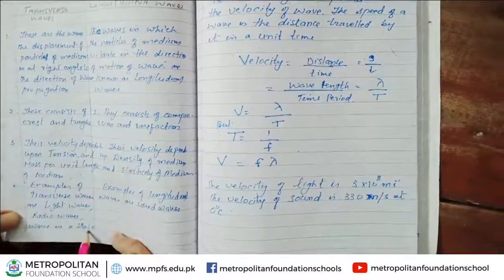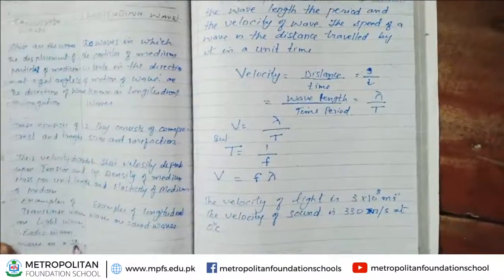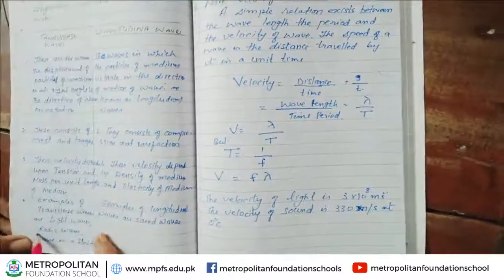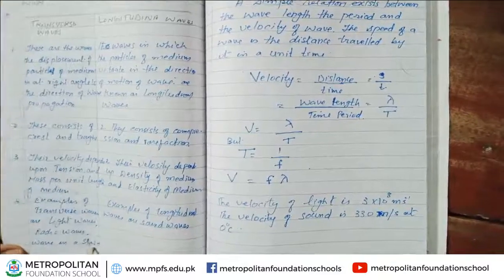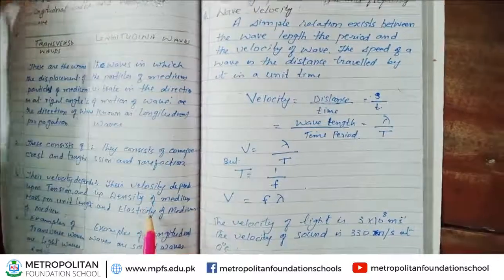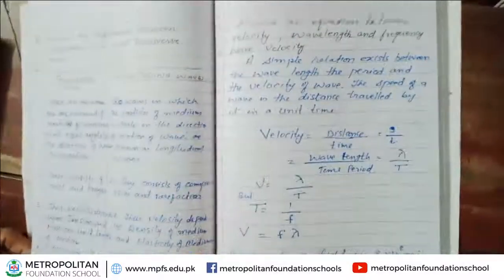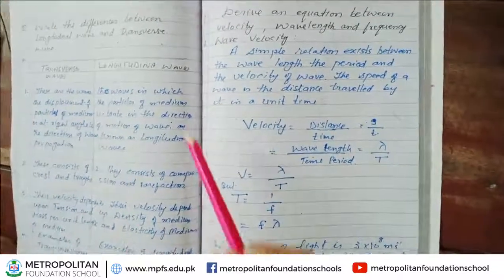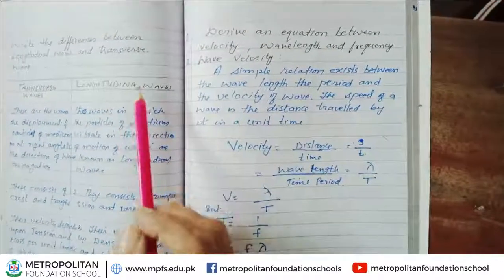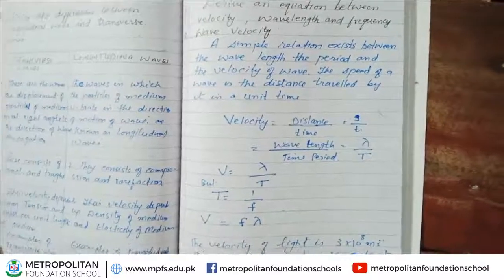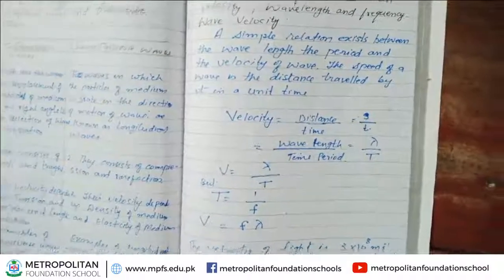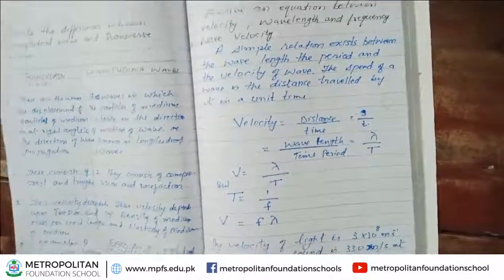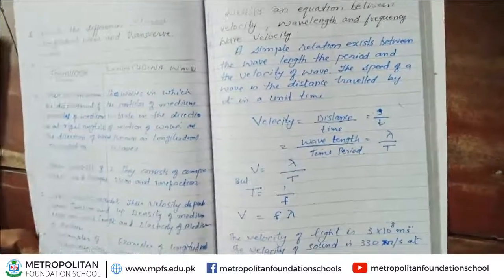Waves in a spring are longitudinal waves. Waves on a string are transverse waves. Sound waves and mass-spring systems produce longitudinal waves.